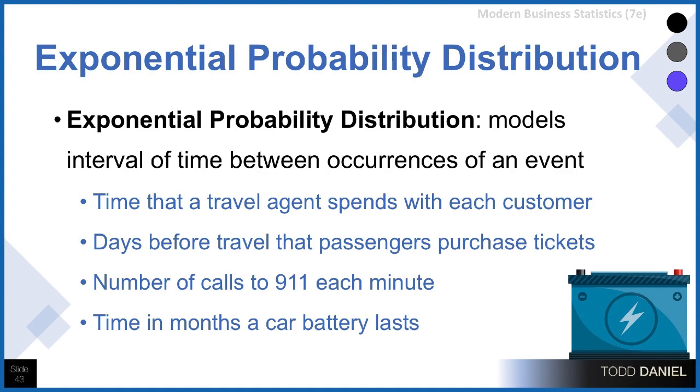Now you might say that sounds familiar — I remember something about occurrences and time. What you may be thinking about is the Poisson distribution that we learned about as a discrete probability distribution. I'm going to clarify the difference between these two distributions in just a little while, but for now let's look at how we would use an exponential probability distribution.